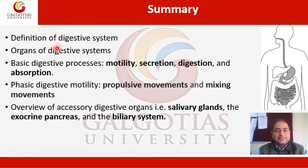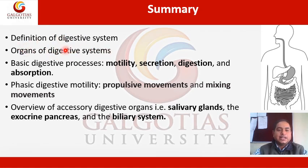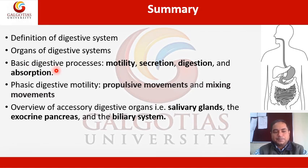In this class, we have learned about the digestive system: its overview, definition, organs of the digestive system, the accessory glands, and exocrine and endocrine glands present in the digestive system. The accessory organs include the salivary gland, biliary system, and liver. The basic digestive processes are motility, secretion, digestion, and absorption. We have also analyzed the phasic digestive motility — propulsive movement and mixing movement — which are necessary for the digestion process.